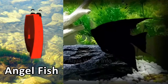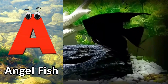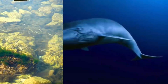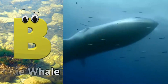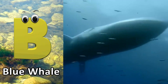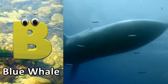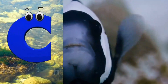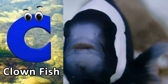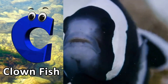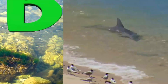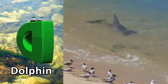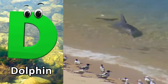A is for angelfish, ah, ah, angelfish. B is for blue whale, buh, buh, blue whale. C is for clownfish, kuh, kuh, clownfish. D is for dolphin, duh, duh, dolphin.